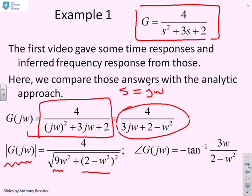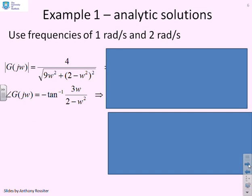Similarly, the phase, the argument of G(jω), is tan⁻¹(3ω/(2 - ω²)). That's the imaginary part divided by the real part. But notice there's a minus sign because this complex number is in the denominator.